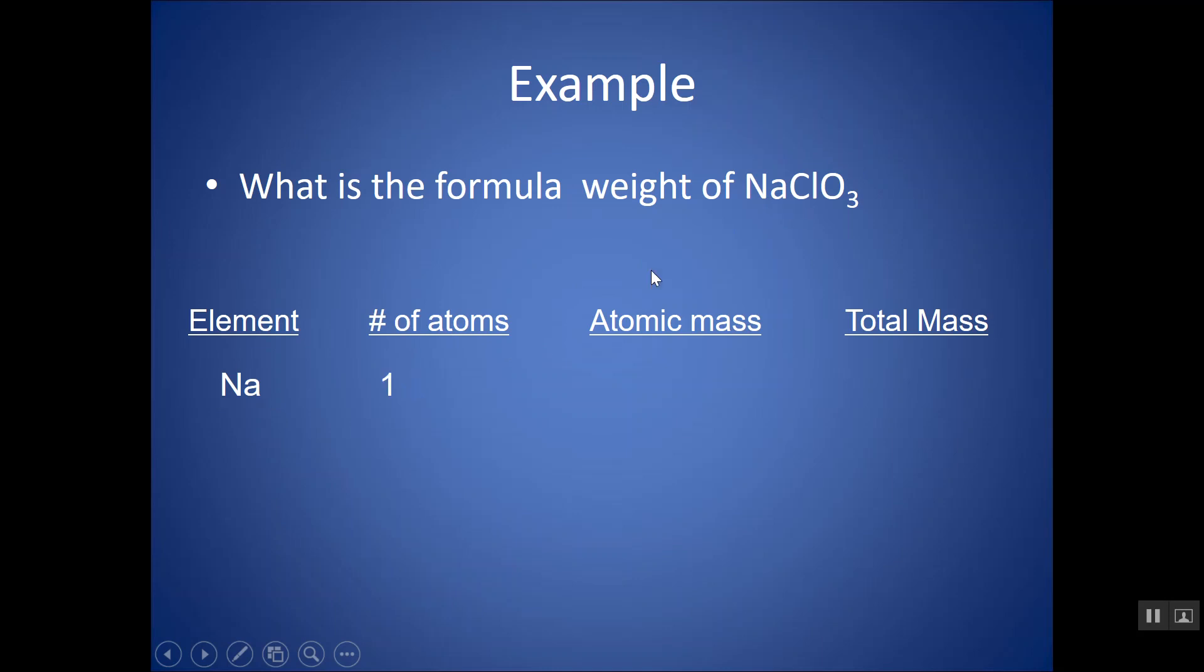Notice there's just one atom because there's no subscript, which we assume to be a subscript of one. Look up the atomic mass of sodium, it's about 23. Depending on the accuracy, you might want to round to one decimal point here, especially if you have an atomic mass that's really in between two numbers, like chlorine is about 35.45. You really want to keep a decimal place there.